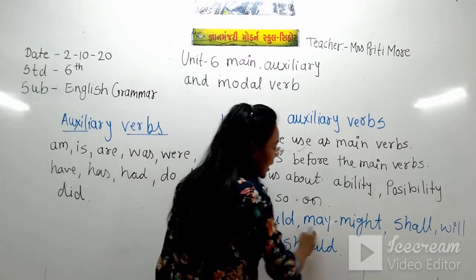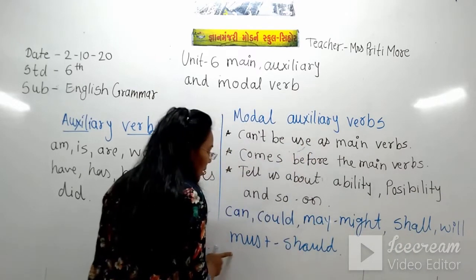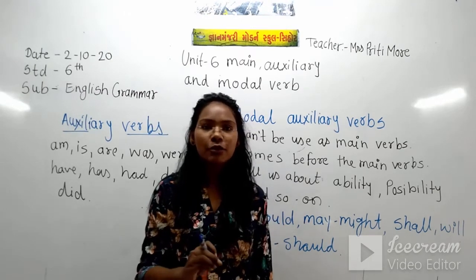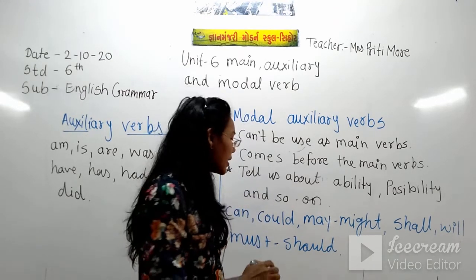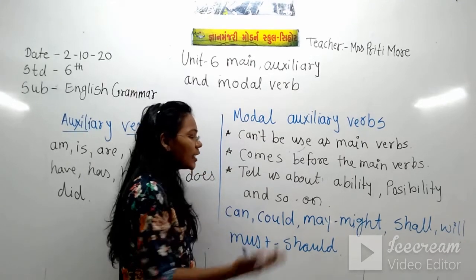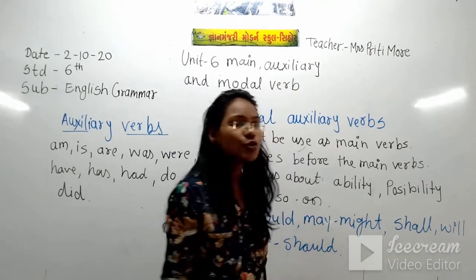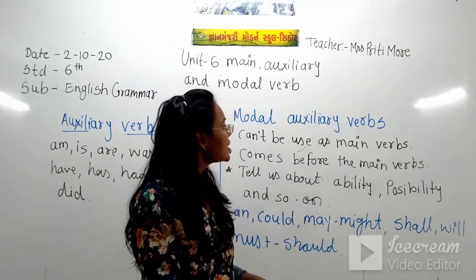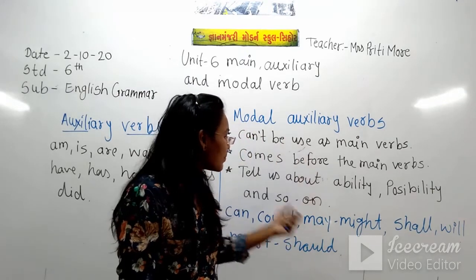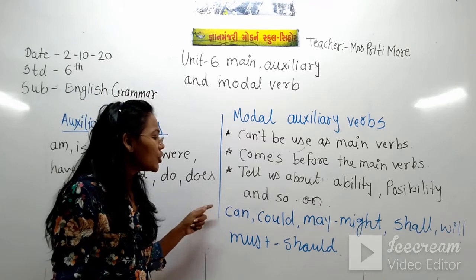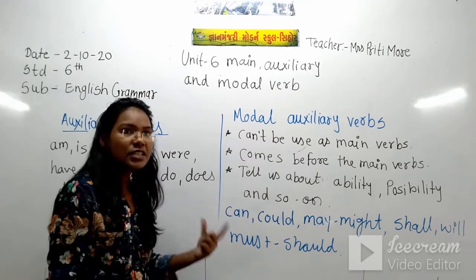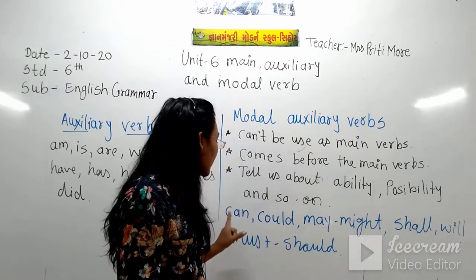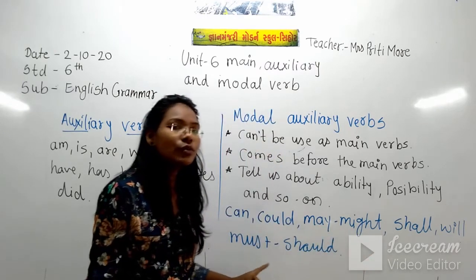So to summarize, the modal auxiliaries are: can, could, may, might, shall, will, must, and should. You have to learn these for standard 6. Write them down in your notebook so you know which are the modal auxiliaries. If asked in a question, you should be able to list them.